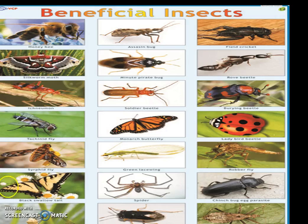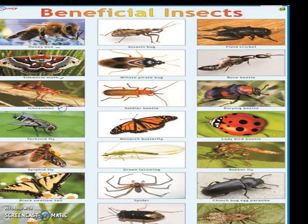See these slides, observe carefully — these are insects you have also seen in real life. This is a honey bee, this is a silkworm moth, Ichneumon, Tachinid fly, Syrphid fly, and Black swallowtail butterfly.